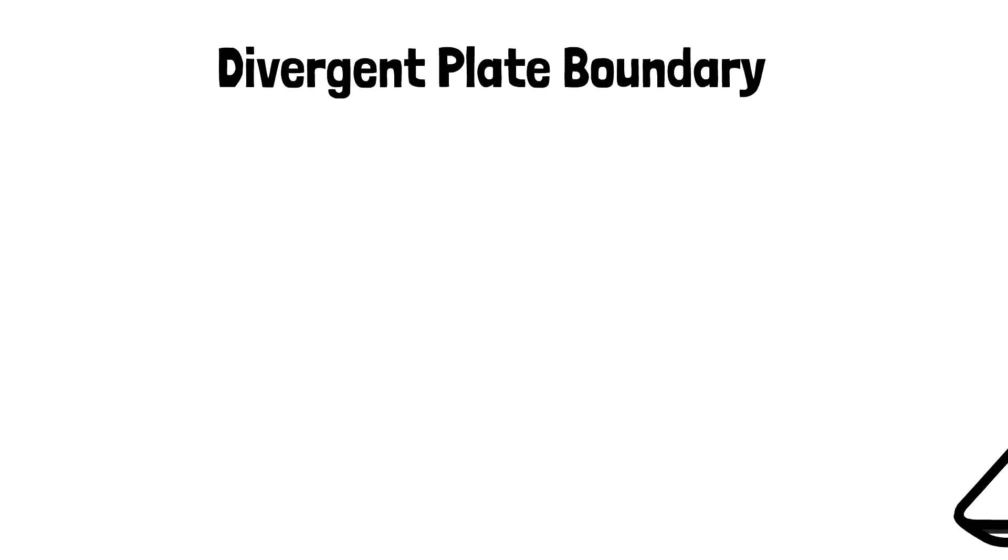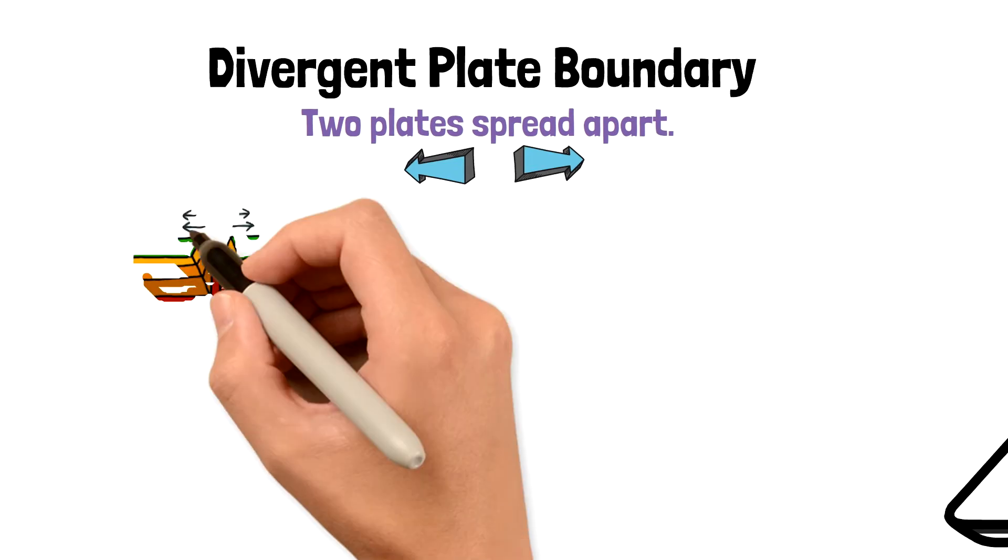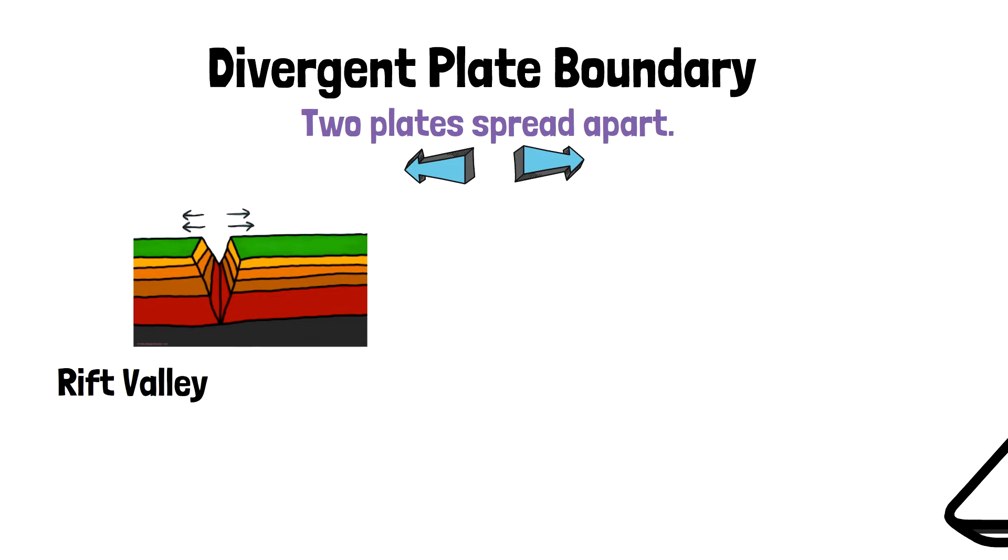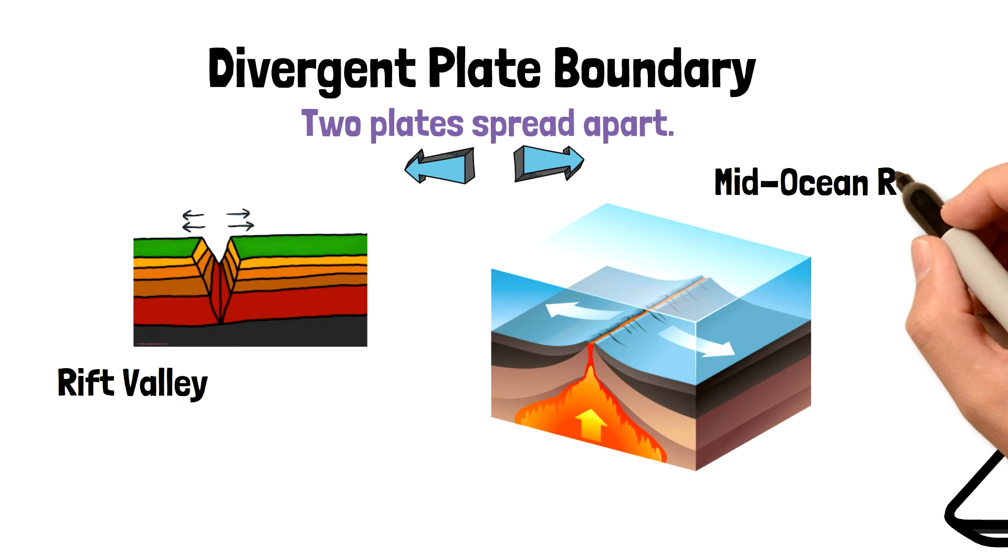On the contrary, divergent plate boundaries are where two plates spread apart from each other. When this happens, a rift valley can form, which is just a valley in the ocean. Another feature that can form is a mid-ocean ridge, which is an underwater mountain chain.